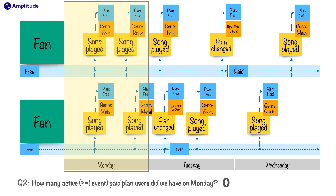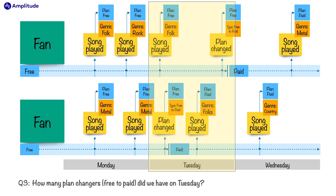Question three: how many plan changers free to paid did we have on Tuesday? Both of our fans had plan changed events on Tuesday, and both of those plan change events had type properties with the value free to paid. So the answer is two. Question four: how many paid plan song players did we have on Tuesday? This one is tricky. Fan one changed their plan but had no song plays after changing their plan on Tuesday. Fan two changed their plan on Tuesday and had a song play after changing their plan. So the answer is one.